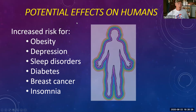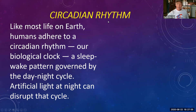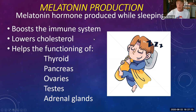Like most life on Earth, humans adhere to a circadian rhythm — our biological clock — a sleep-wake pattern driven by the day-night cycle. Artificial light at night can disrupt that cycle. One thing that happens when we sleep is our bodies produce a hormone called melatonin, which has many benefits: it boosts our immune system — really important during the COVID-19 pandemic — lowers cholesterol, and helps the functioning of the thyroid, pancreas, ovaries, testes, and adrenal glands. If our sleep cycle is disrupted by light pollution, we produce less melatonin, which has a negative effect on our bodies.